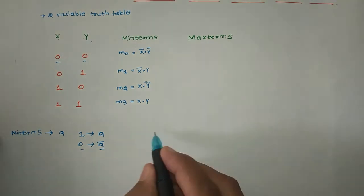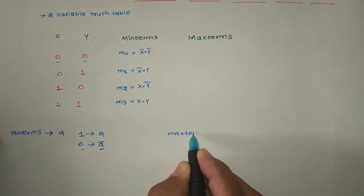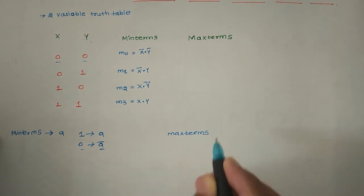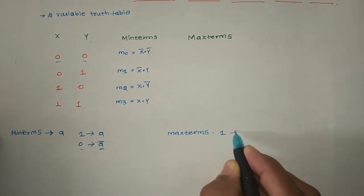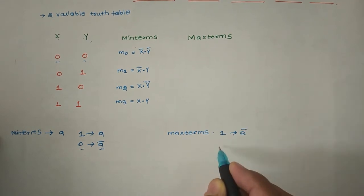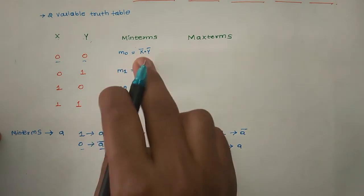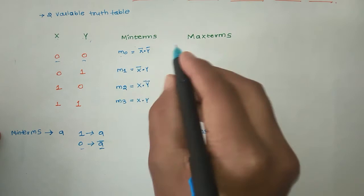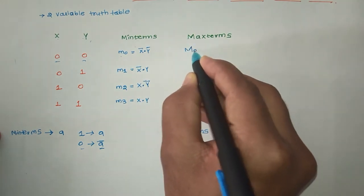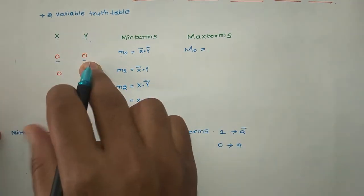Next max terms. Max terms: we will end with capital M. So capital M to represent. 0 represents the original variable, 1 represents the complement.